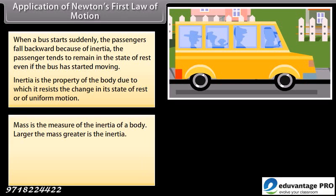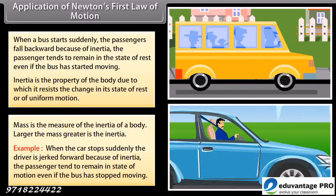Mass is the measure of the inertia of a body. Larger the mass, greater is the inertia. Example: when the car stops suddenly, the driver is jerked forward because of inertia. The passenger tends to remain in state of motion even if the bus has stopped moving.